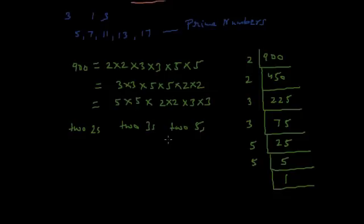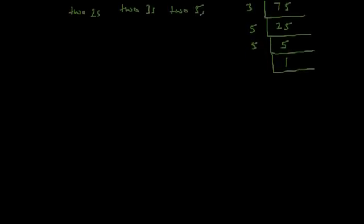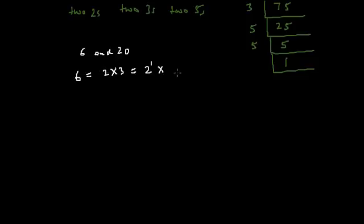Now let's use this prime factorization method to find the LCM and HCF of two numbers. Let's find the HCF of 6 and 20. Factorizing 6 into prime factors, we get 6 = 2 × 3, or 2 raised to the power 1 multiplied by 3 raised to the power 1.